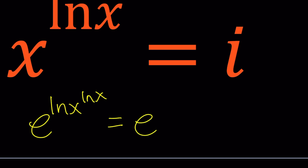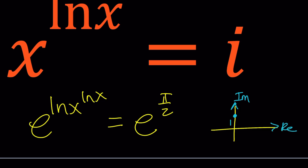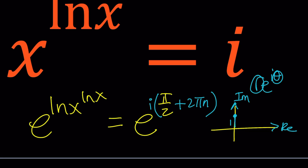That is e to the power i times pi over 2. Remember that pi over 2 comes from plotting i on the imaginary axis — the positive top part. It's one unit away from zero, which means we can write it as r·e^(iθ) where r is 1 and θ is pi over 2. That's why we write this as pi over 2 times i. But we can also add a multiple of 2π, which is 2πn, because of the several branches of the complex logarithm. This has periodic values going up by multiples of 2π, so anytime you add 2π you get a different solution — meaning there are infinitely many solutions.